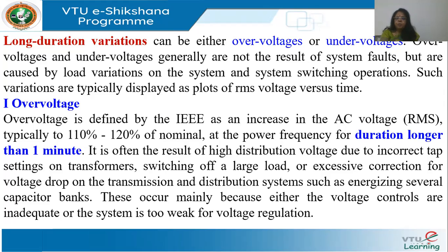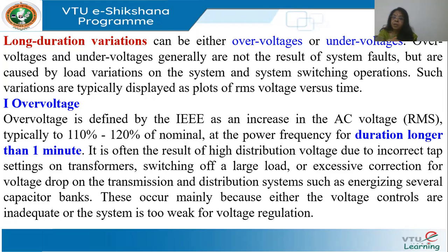As defined by IEEE, over voltage is an increase in the AC voltage RMS value, typically to 110 to 120 percent of nominal (1.1 to 1.2 per unit) at power frequency, for deviations longer than one minute. Up to 110 percent of nominal is not considered over voltage — only above 110 percent qualifies.